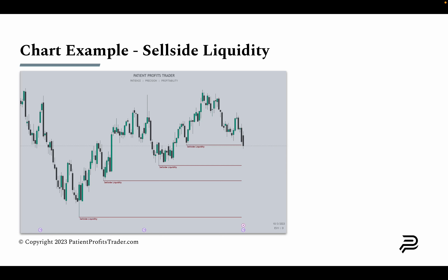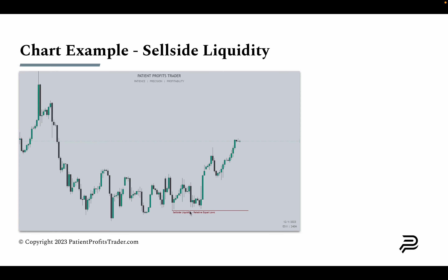Let's look at some chart examples. In this screenshot, we have a swing low here, a swing low here, a swing low here, and a swing low here. Anyone that went long from any of these points has their stop loss resting below them — sell stops, or sell-side liquidity. We also have relative equal lows here where price came down twice to similar levels. Anyone who went long from these areas has sell-side liquidity resting below those relative equal lows.